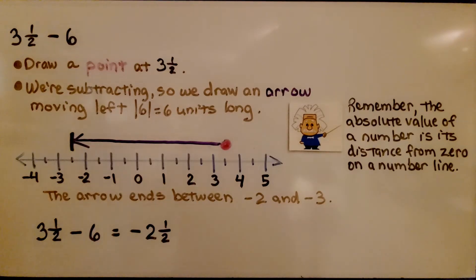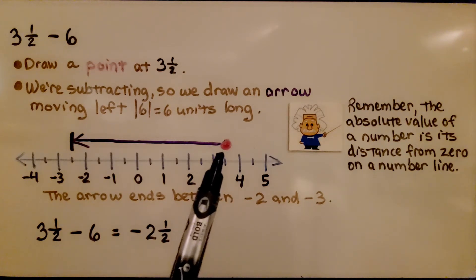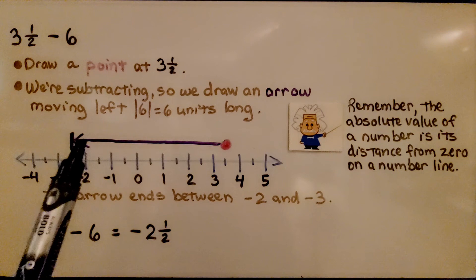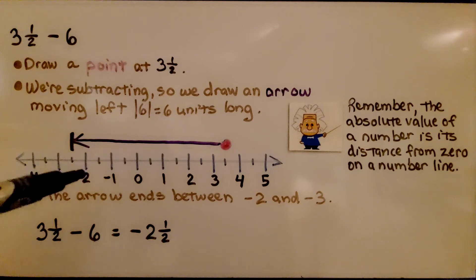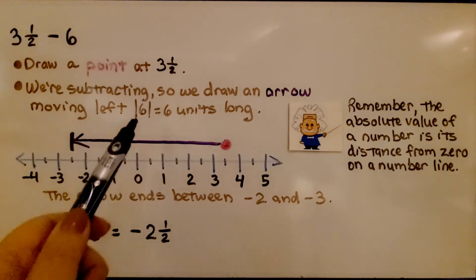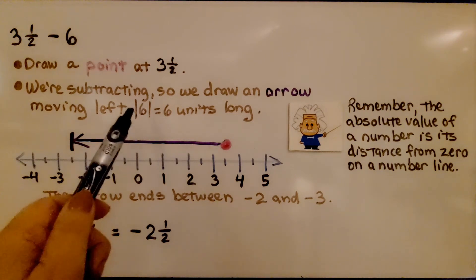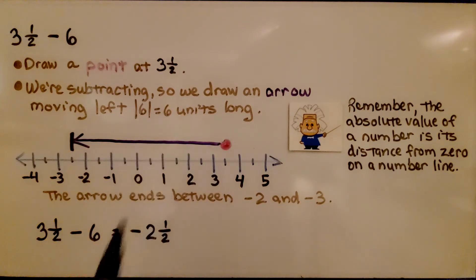Here we have positive 3 and a half and we're subtracting 6, a positive 6. We draw a point at 3 and a half, between 3 and 4. Because we're subtracting, we draw an arrow moving left with absolute value of 6, which is 6 units long. That puts us in between negative 2 and negative 3, so the answer is negative 2 and a half. Remember, the absolute value of a number is its distance from 0 on a number line, so moving the absolute value of 6 means 6 units.